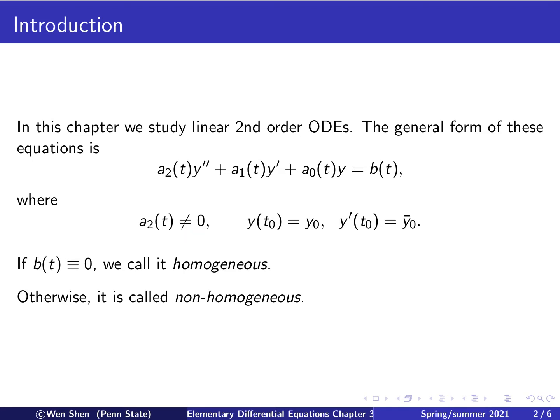The equation is associated with initial conditions. At initial time t0, y is given, and also y' at t0 is given. So this is y0, and this is ȳ0 for the initial derivative.